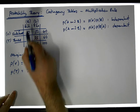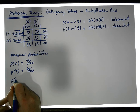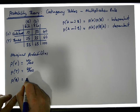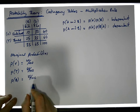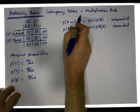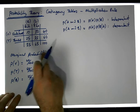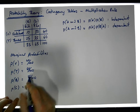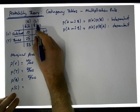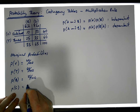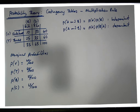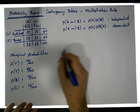The probability of getting a bill pay customer: there are 25 chances out of 100. I'm going through this quickly because a previous video covers marginal probabilities in detail. The probability of getting a pay-as-you-go customer: there are 65 chances out of 100.